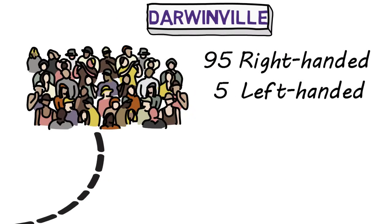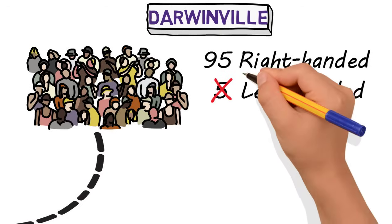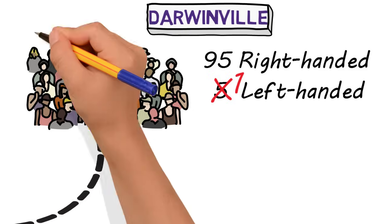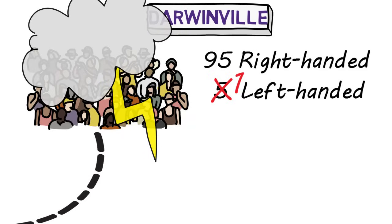Let's go back to our town of Darwinville where we now have 96 people and only one lefty. A freak storm comes through and kills 75 of the residents of Darwinville, including our last left-handed person and all remaining recessive left-handed alleles.